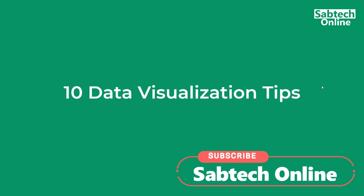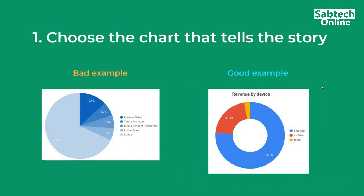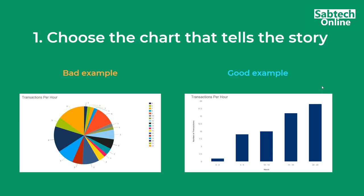Next, we are going to look at the 10 data visualization tips, examining bad and good examples. When you are choosing a chart to tell your story, the bad example on the left shows colors where the contrast is not visual enough compared to the right. It is the same data but one is more visible than the other. When data is too much to compare, we go for bar charts rather than a pie chart.